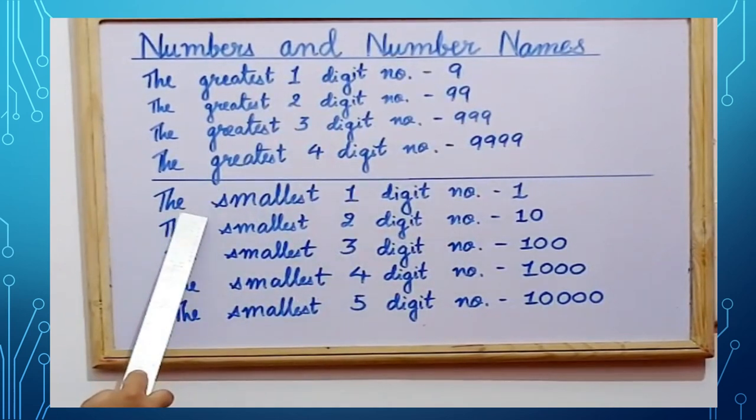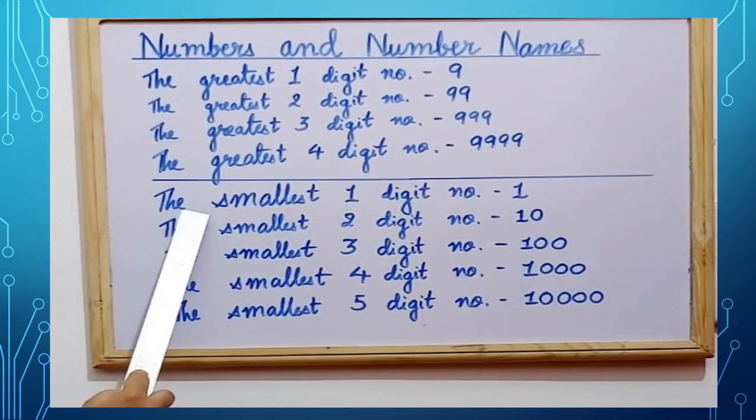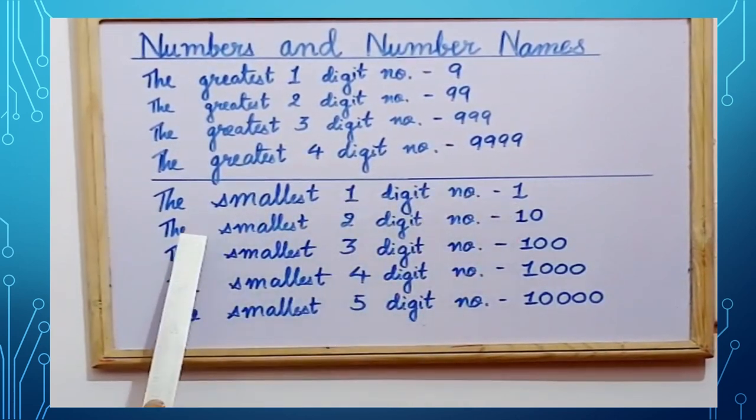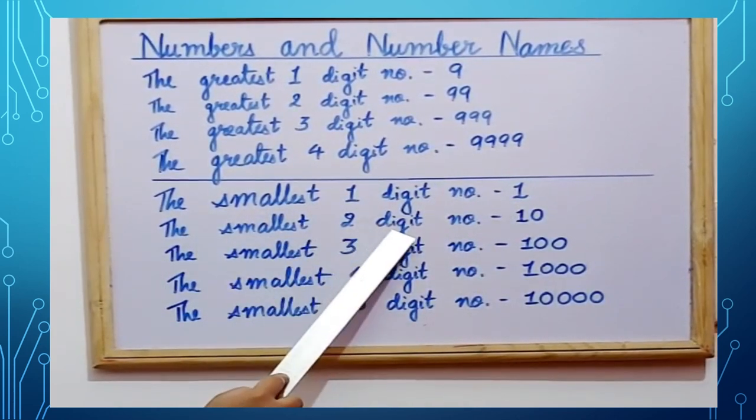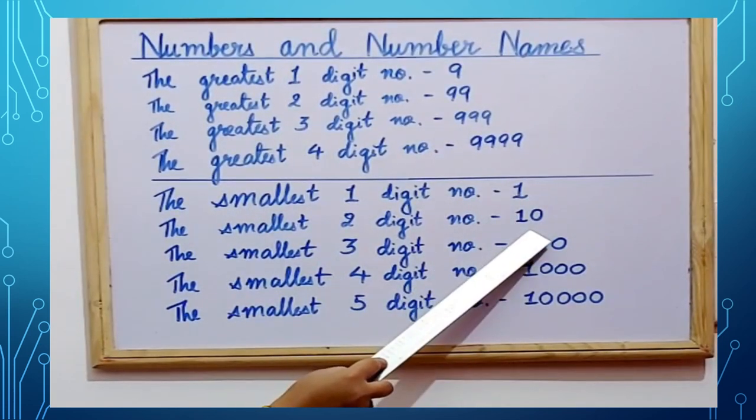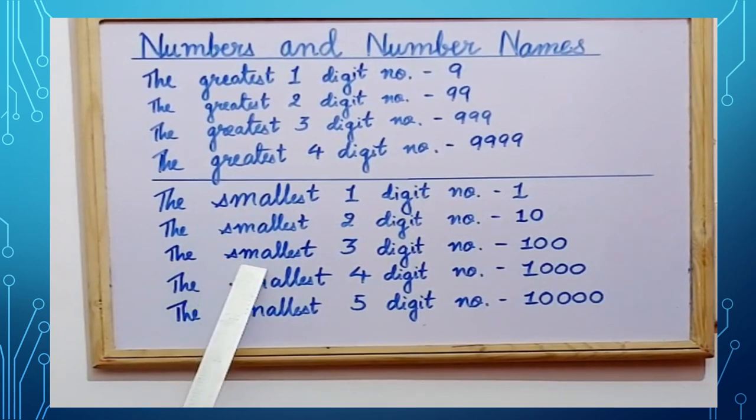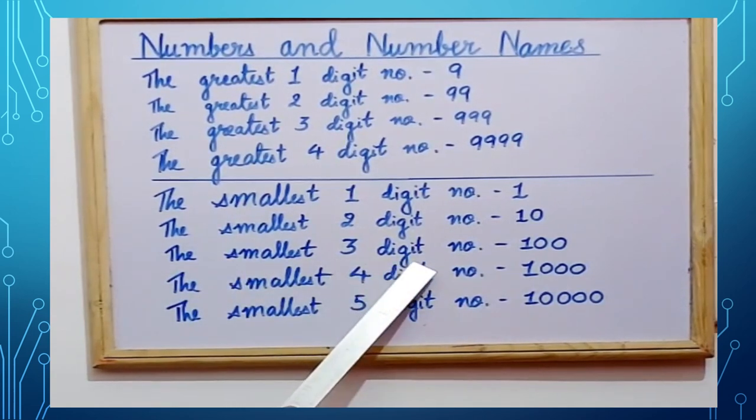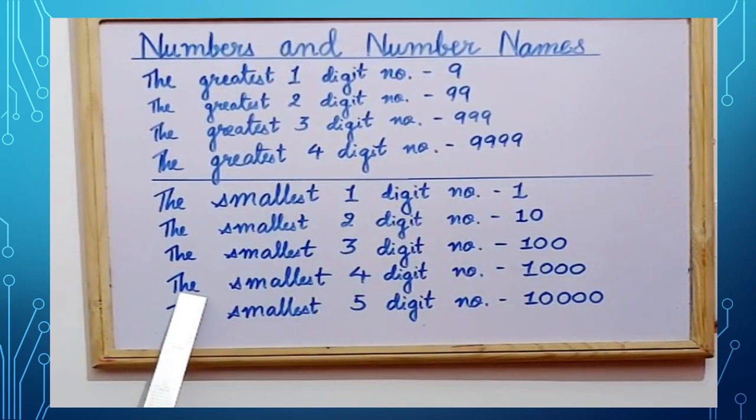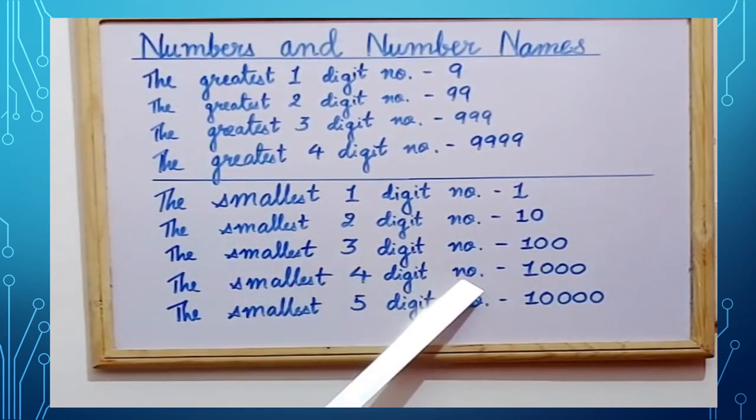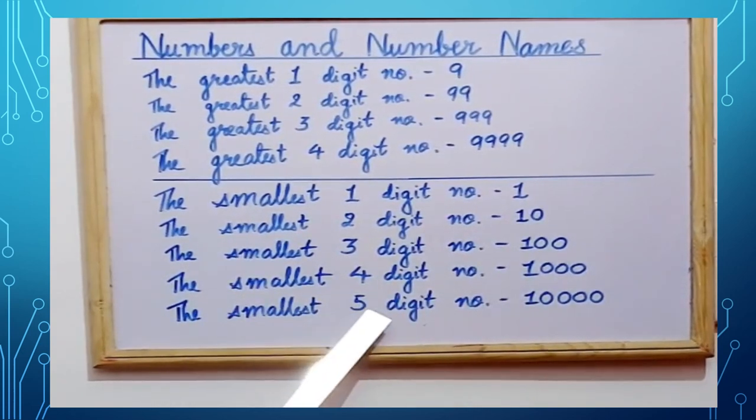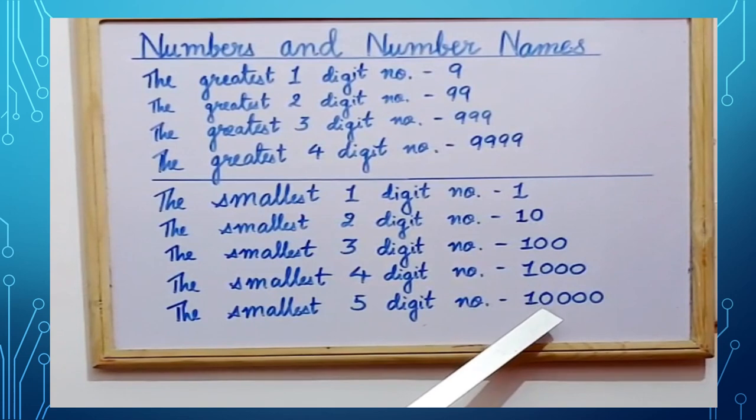In the same manner, let us see the smallest one-digit number which is 1. The smallest two-digit number is 9 plus 1, that is 10. In the same manner, the smallest three-digit number is 100 and the smallest four-digit number is 1,000. The smallest five-digit number will be 10,000.